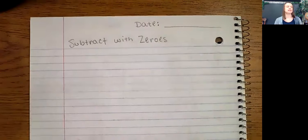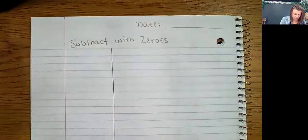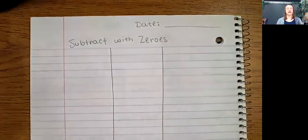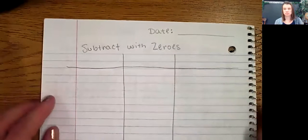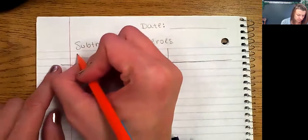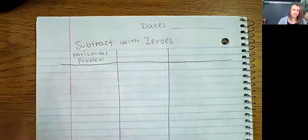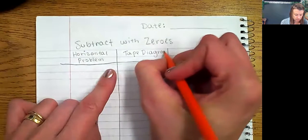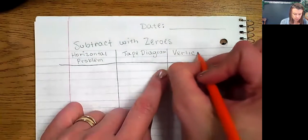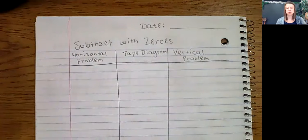Please also write the date — depending on when I show you this video it might be a different date. In order to prepare my page, I'm going to make three columns going all the way down, and then draw one line across so that I have space for titles. The first column will be 'horizontal problem,' the next will be 'tape diagram,' and the final one 'vertical problem.' Please have those three columns prepared in your notes.